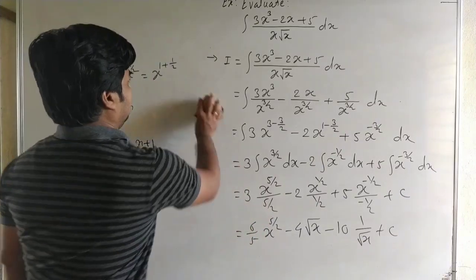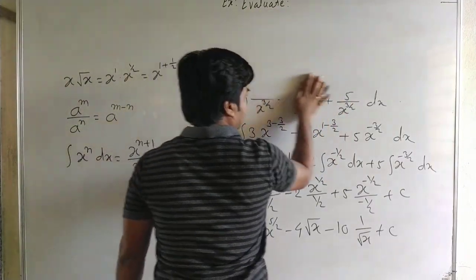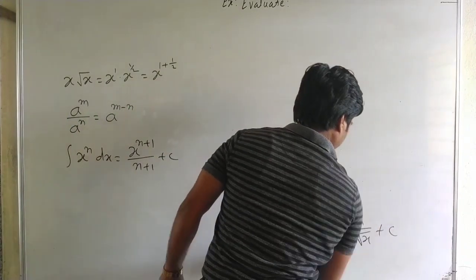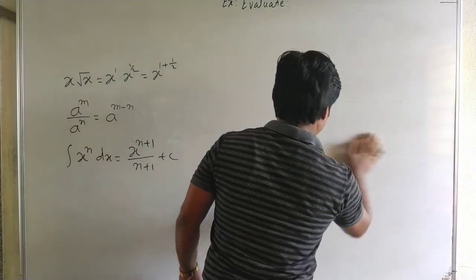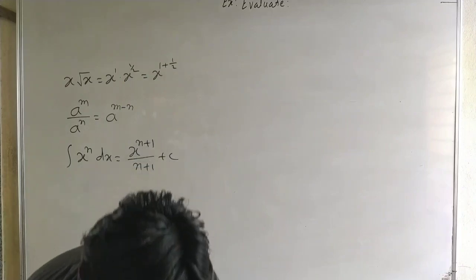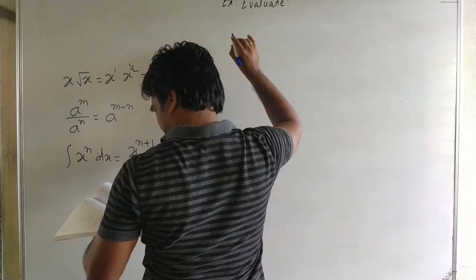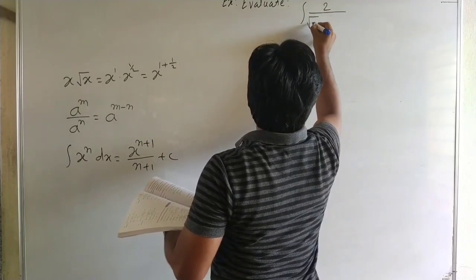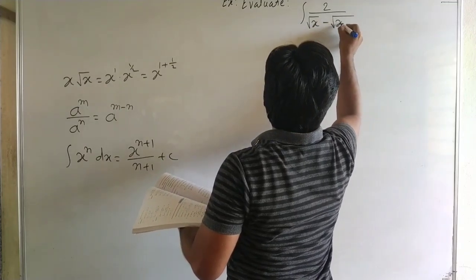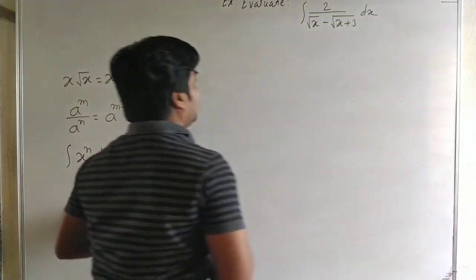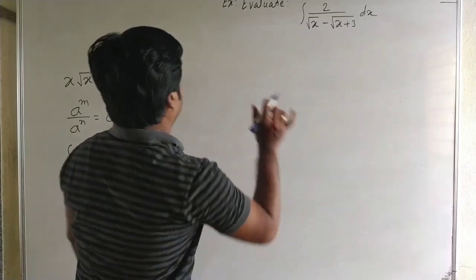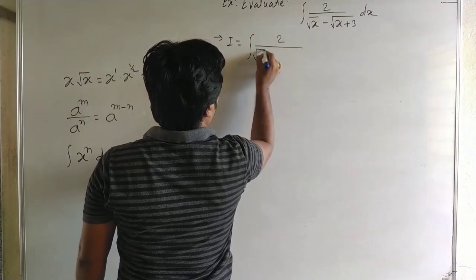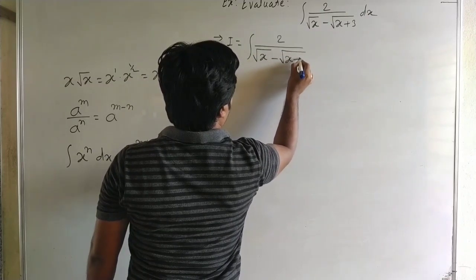Now the next example. Evaluate the integral of 2 upon under root x minus under root of x plus 3 into x dx. Here it is the integral of 2 upon under root x minus under root of x plus 3 dx.